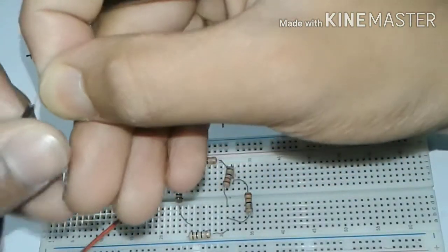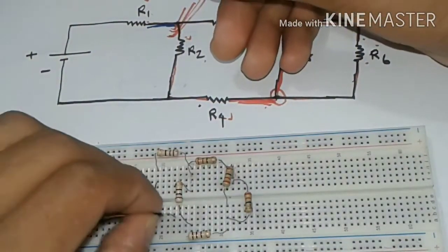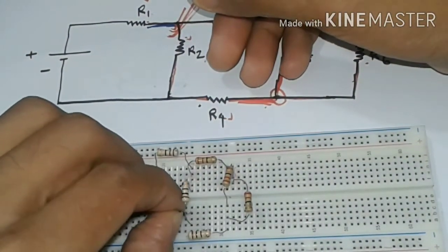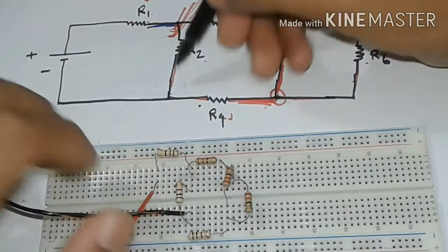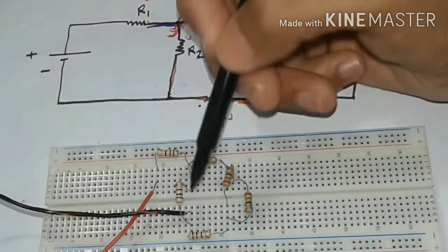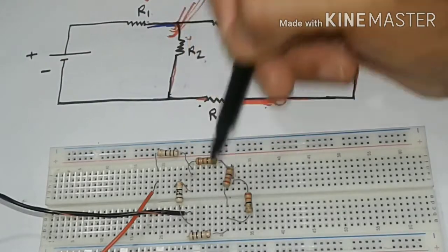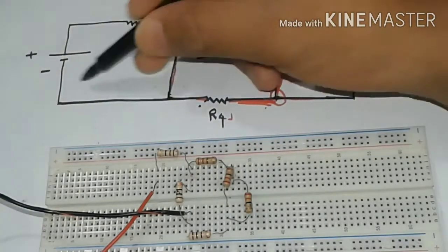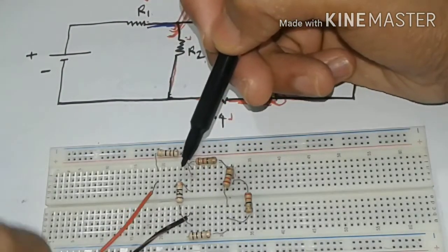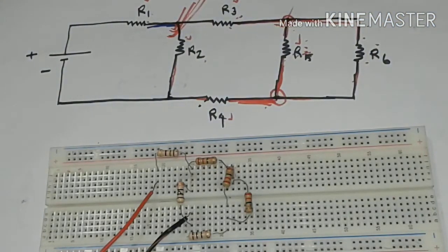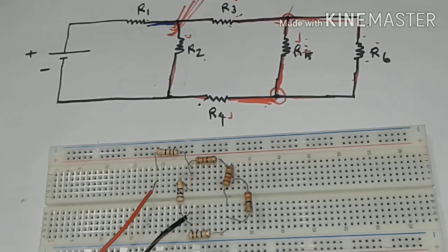So this is how the connections for your attenuation experiment have been made. You can see all the connections have been done properly. I hope everything is clear in the connections and there is no doubt in any of the connections done over here. Thank you students very much.